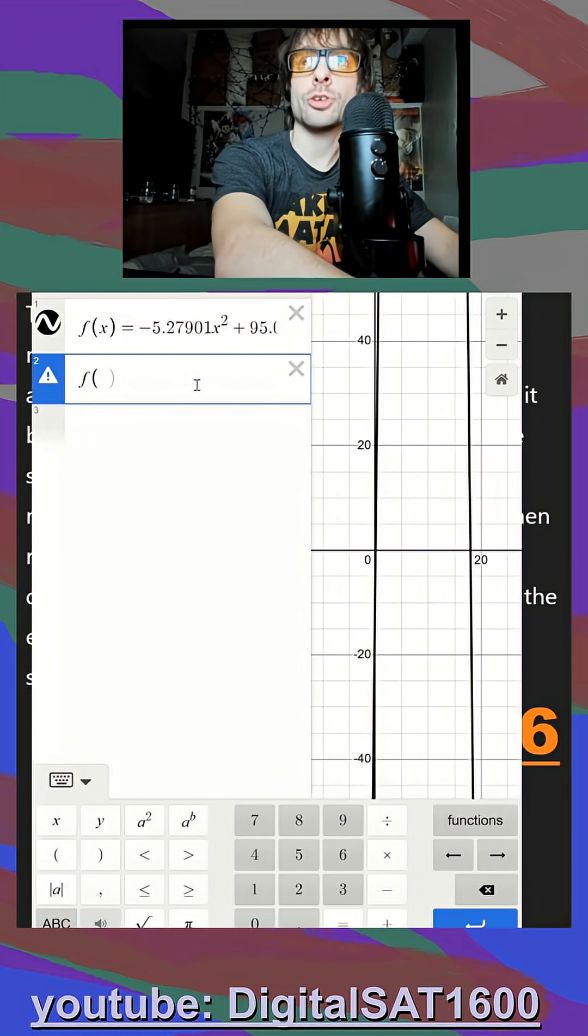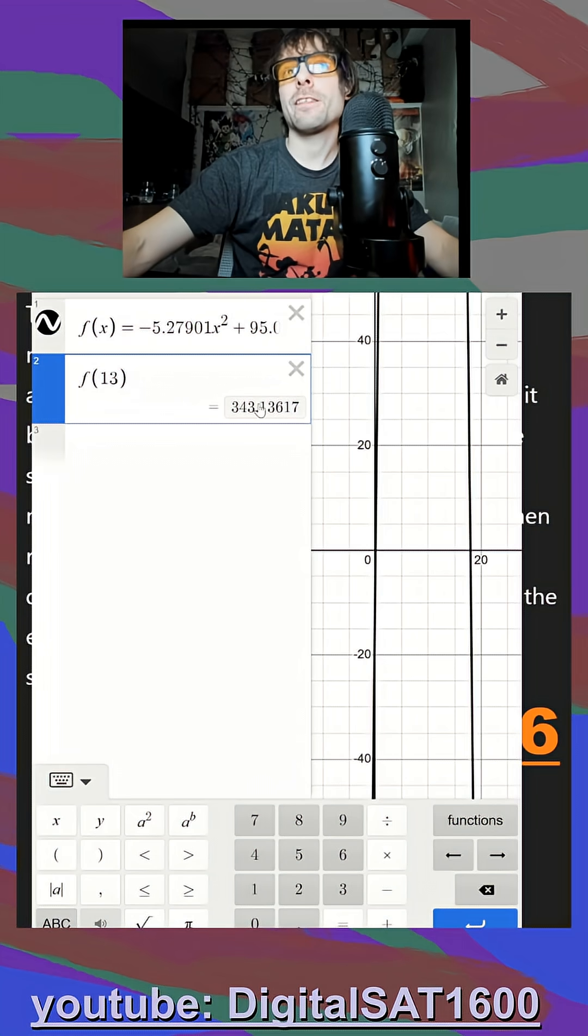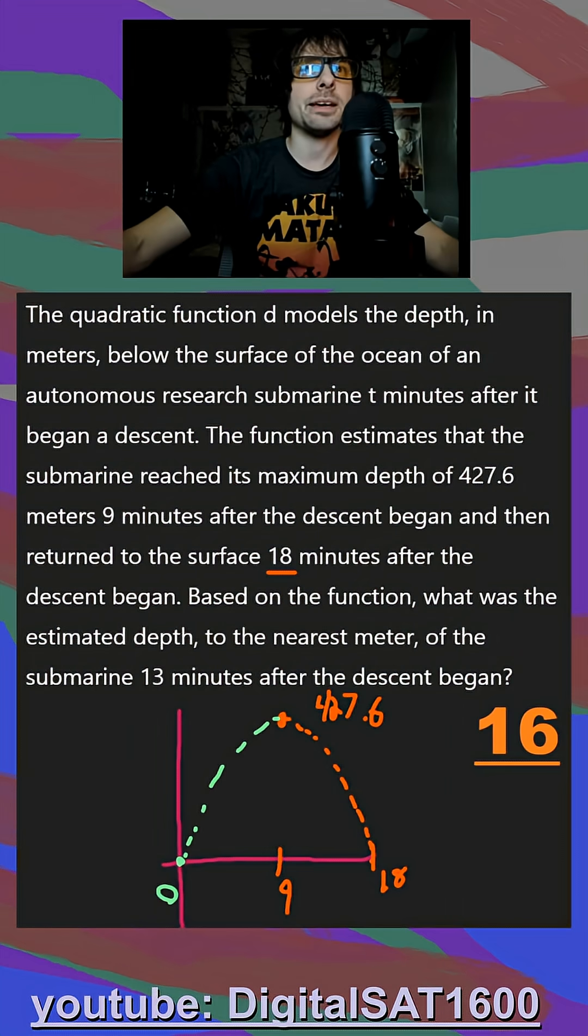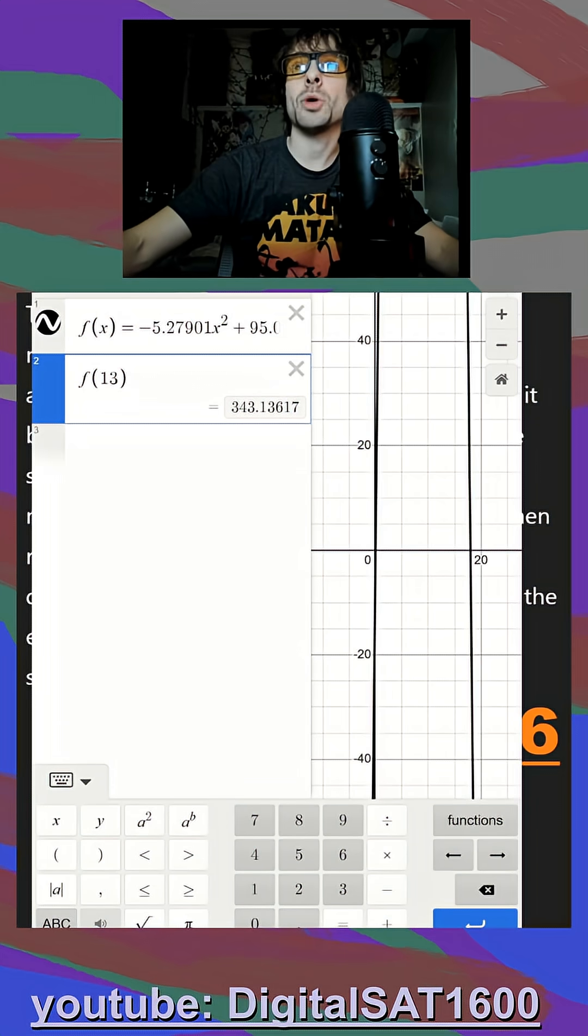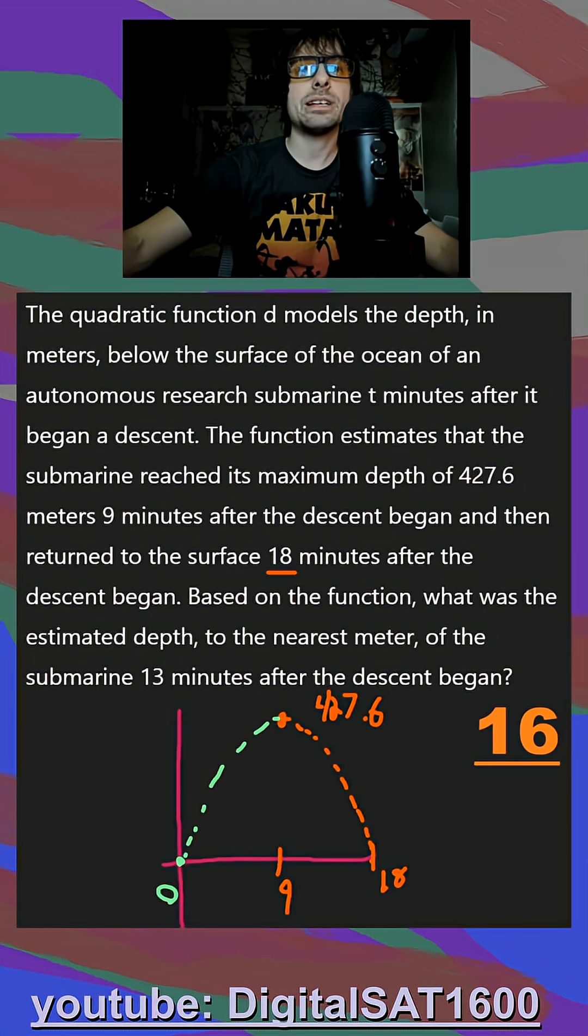So since they want when x is 13 for 13 minutes, I can say when x is 13, I get 343. And they say, let's just see if they want us to round here. They say, what was the estimated depth to the nearest meter? So I'm going to write down here 343 meters as my final answer.